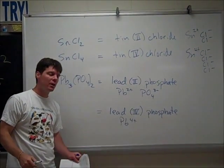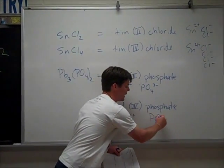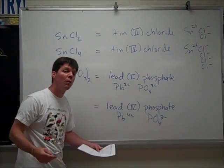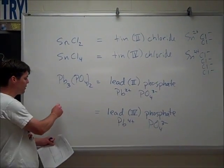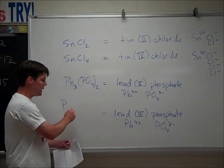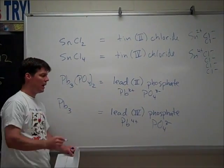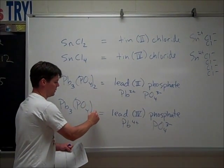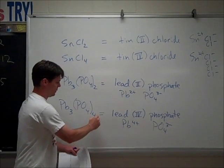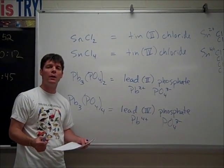Now let's consider the example of lead(IV) phosphate. Again, phosphate is PO4³⁻. So again, to do my ratios, I need Pb. I'll need three of those. And the phosphates, we'll need four of those because the common multiple of three and four is 12.